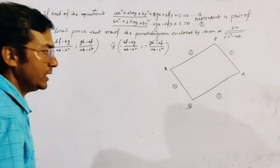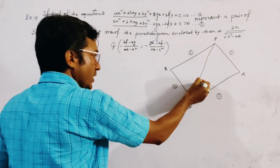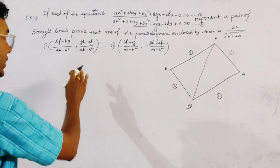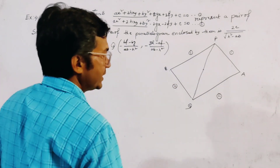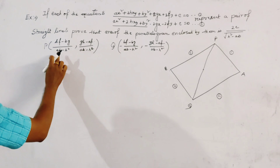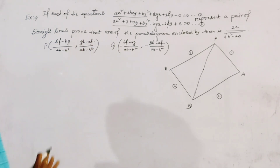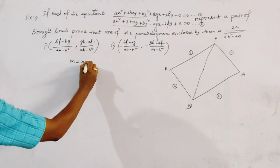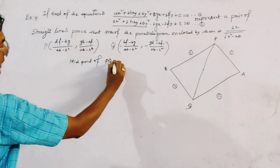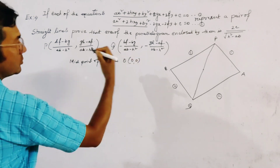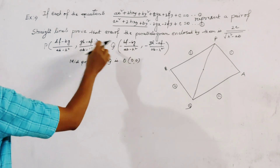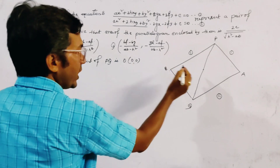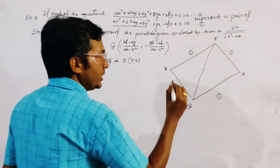Now if we add this diagonal of the parallelogram and find its midpoint, since P and Q have coordinates that are negatives of each other, the midpoint of PQ is the origin O. So O is the origin.